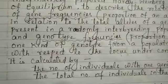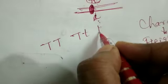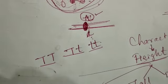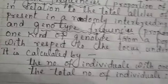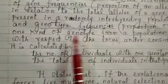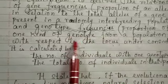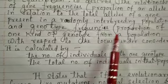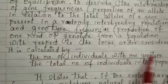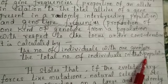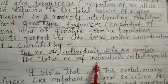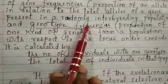Genotype frequency: we have already discussed what a genotype is. To represent a genotype, two alleles are taken together. Genotype frequency means we take the proportion of one kind of genotype from a population — at a particular locus — and divide it by the total number of individuals present in the population. So the total number of individuals with one genotype divided by the total individuals in the population represents the genotype frequency.